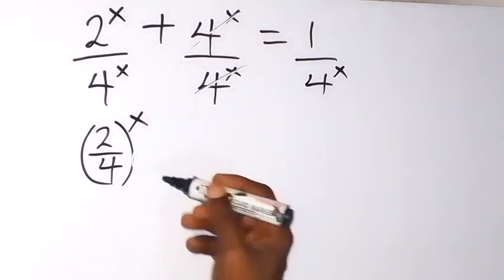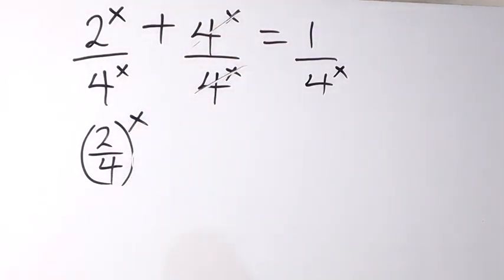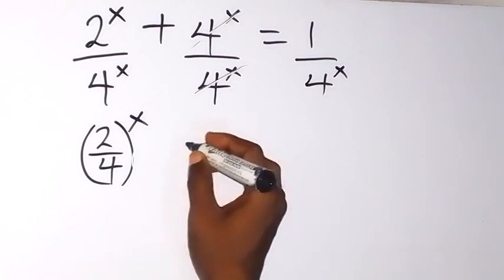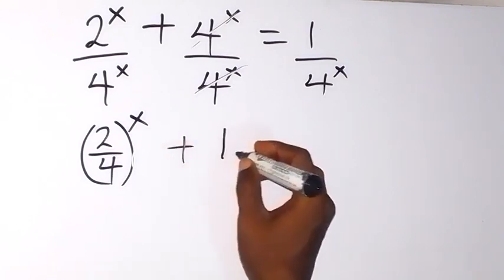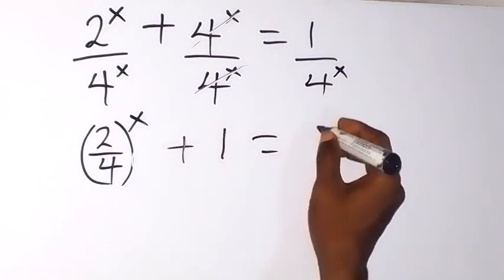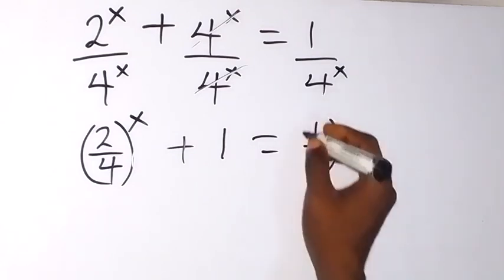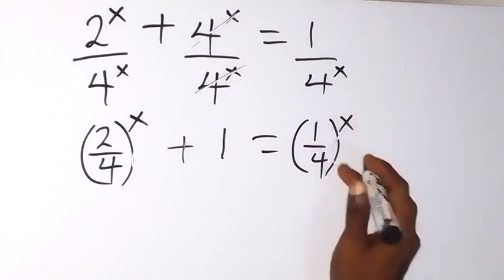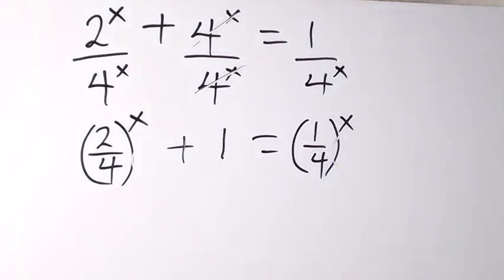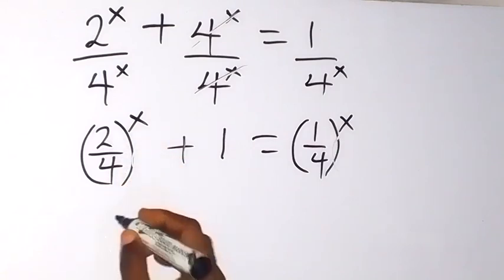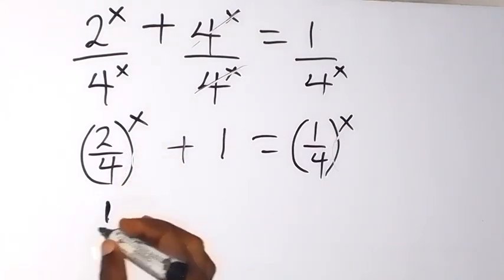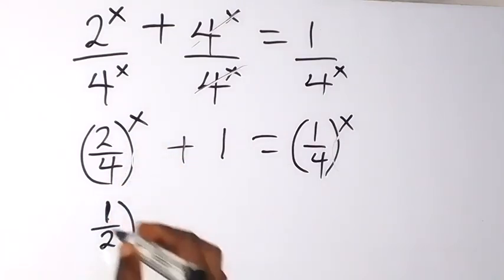Since they have the same power, we can break the two numbers under the power. Then we have plus 1 left here, then equals to — we can also write this as 1 over 4 raised to power x, because 1 raised to power x will still be 1. From there we can reduce what we have inside the bracket, since 2 can go, and we have 1 over 2 left.